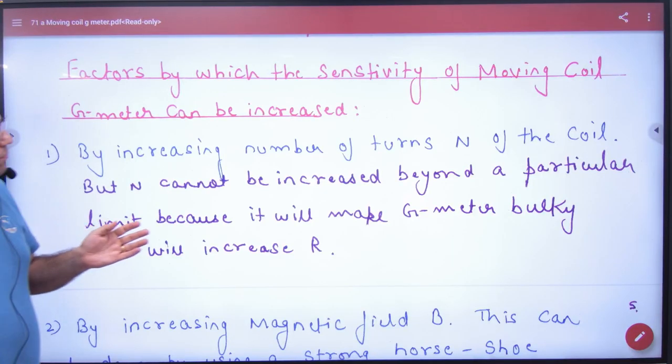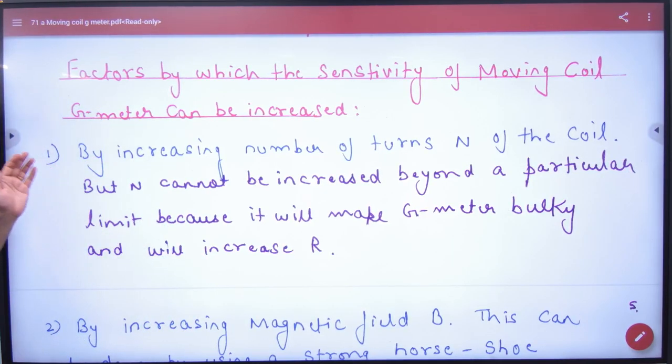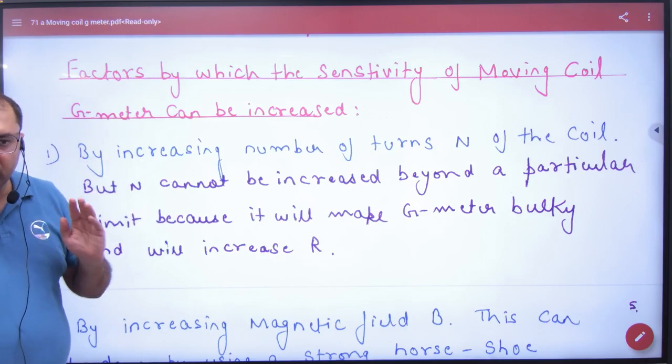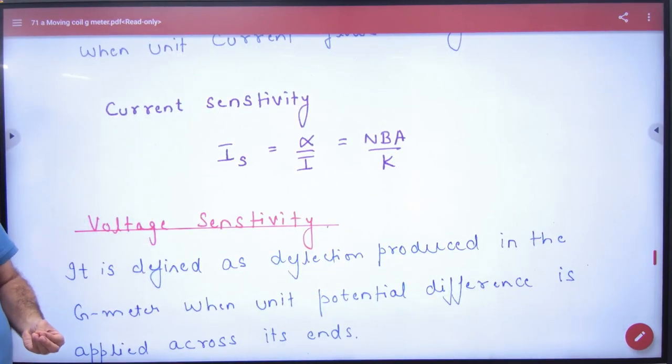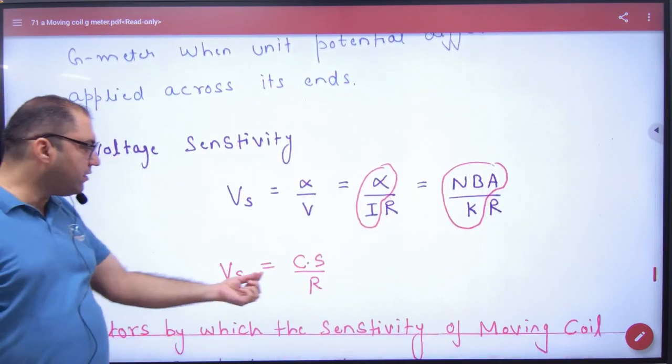Look, factors by which sensitivity of moving coil galvanometer can be increased. Now tell me that if current sensitivity is increased, then voltage sensitivity will also be increased.